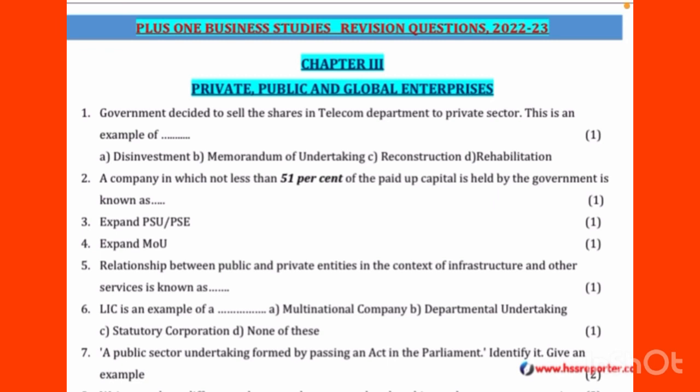Next question: A company in which not less than 51% of the paid-up capital is held by the government is known as DASH. That company is named as a Government Company.